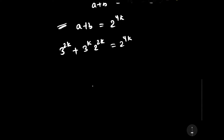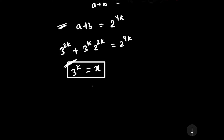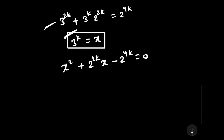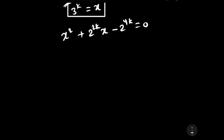Let us consider 3 to the power k equal to x. Then the equation becomes x squared plus 2 to the power 2k times x minus 2 to the power 4k equals 0. Comparing with the standard quadratic equation Ax squared plus Bx plus C equals 0, we get A equals 1, B equals 2 to the power 2k, and C equals minus 2 to the power 4k.